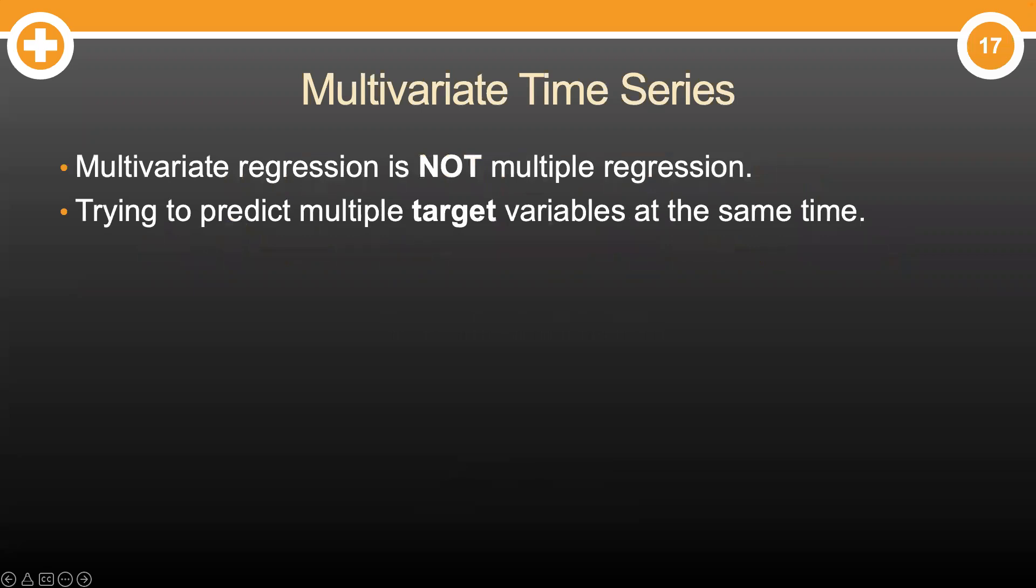First things first, when talking about multivariate anything, we don't mean multiple predictor variables. I see people all the time who think when someone says multivariate regression, they mean multiple regression. Not true. I know it sounds the same, but the difference is very important. Multivariate regression, and by proxy multivariate time series, refers to modeling multiple target variables at the same time.